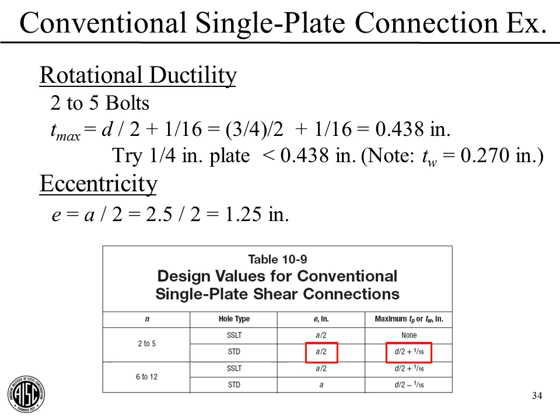Checking rotational ductility, we can set the thickness quickly. For two to five bolts with standard holes, the maximum plate thickness is the bolt diameter divided by two plus one-sixteenth. That gives a maximum thickness of 7/16 of an inch. I'm going to try a quarter-inch plate, which is thinner than 7/16, so it satisfies rotational ductility. Also, the web thickness is 0.270 inches for our W14, so a quarter-inch plate is proportional. This is our trial plate. While we're here, let's grab the eccentricity E for bolt design: A divided by 2 equals 1.25 inches.